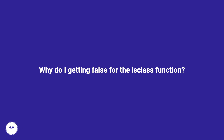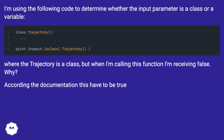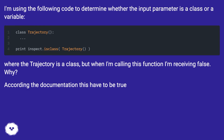Why am I getting false for the is_class function? I'm using the following code to determine whether the input parameter is a class or a variable, where Trajectory is a class, but when I'm calling this function, I'm receiving false. Why?